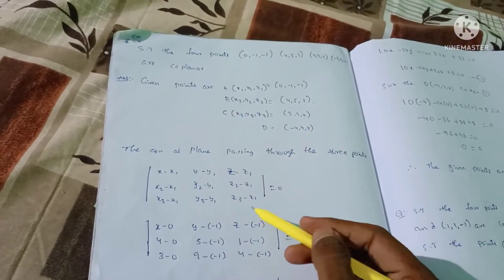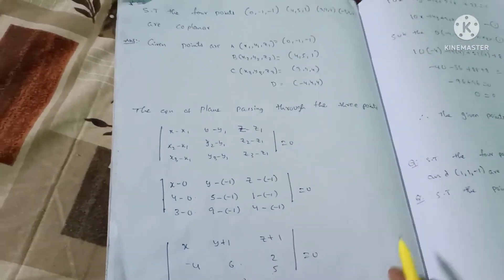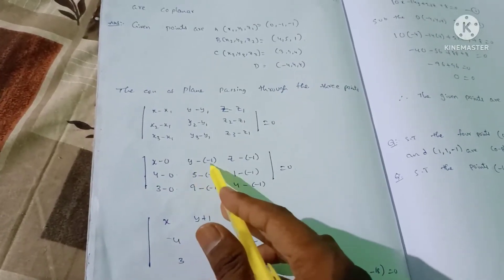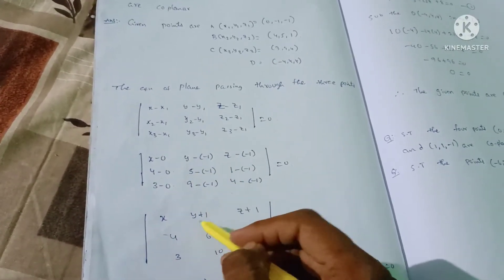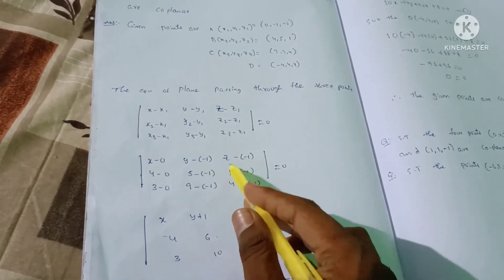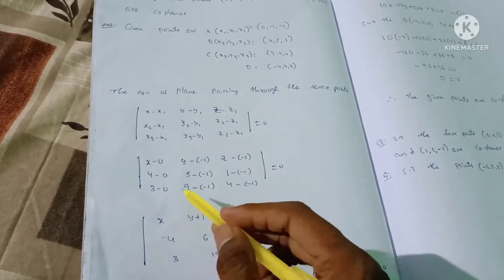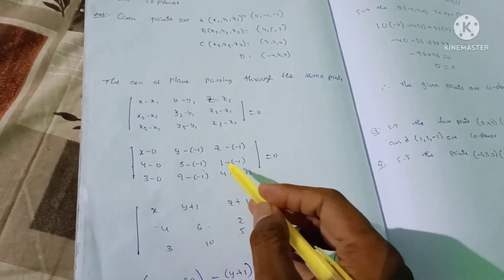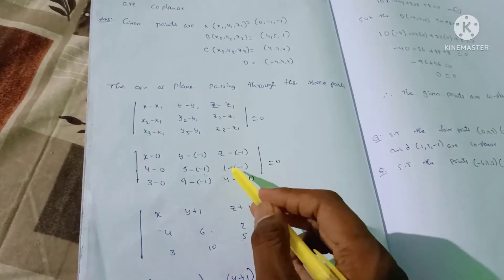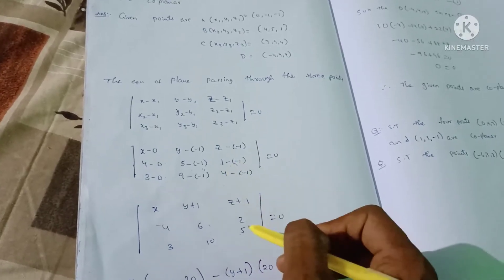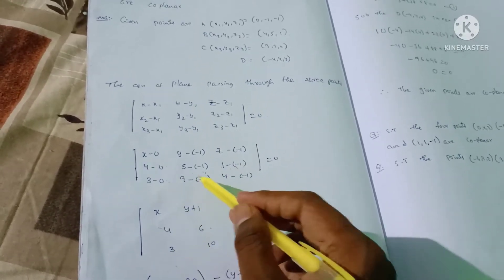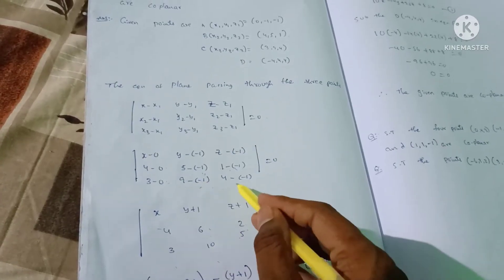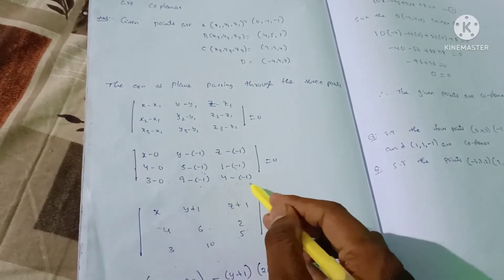Substituting values: x minus x1 = x minus 0 = x. y minus y1 = y minus (-1) = y + 1. z minus z1 = z + 1. x2-x1 = 4+1 = 5 (giving 6 with sign). y2-y1 = 1+1 = 2. x3-x1 = 3+1 = 10 (giving 9+1). x4-x1 = -4+1 = 5 (with sign adjustment).